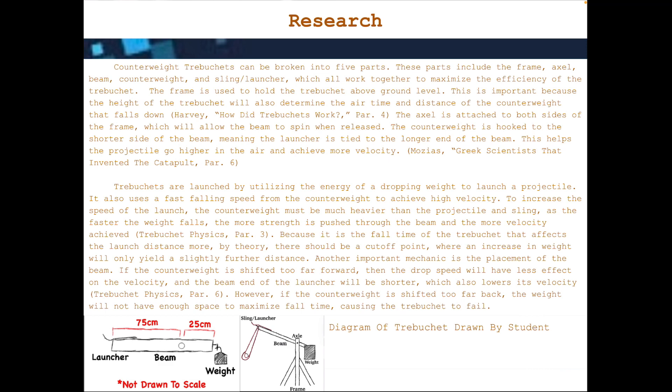Trebuchets have five main parts: the frame, axle, beam, counterweight, and launcher. These pieces all work together to help the trebuchet function.